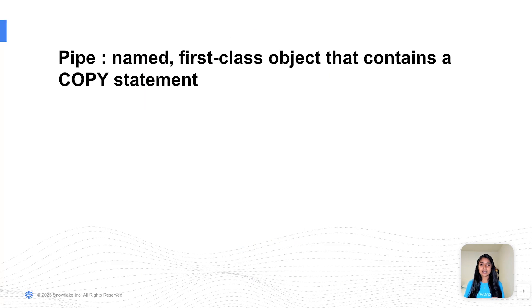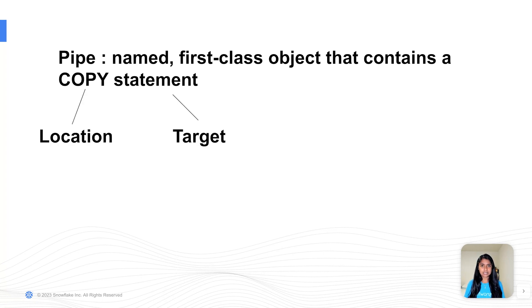A pipe is a named first-class Snowflake object that contains a copy statement. This statement identifies the location of the data files — there is a stage and a target table.